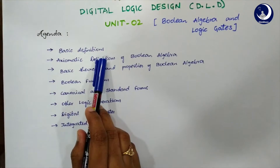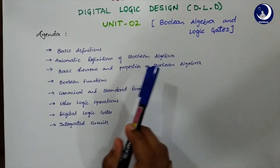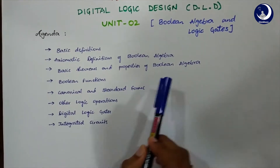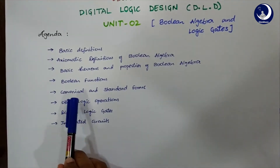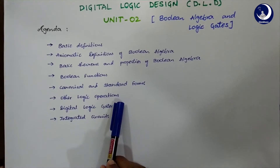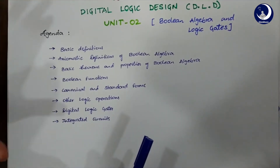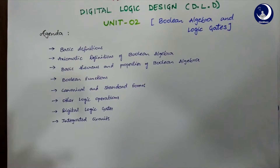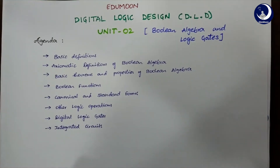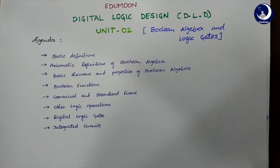We will be covering basic definitions, axiomatic definitions of Boolean algebra, basic theorems and properties of Boolean algebra, Boolean functions, canonical and standard forms, other logic operations, digital logic gates and integrated circuits. Seeing all this agenda, you might confuse yourself, but I will be giving all the necessary information for you to solve any problem given in your textbook.